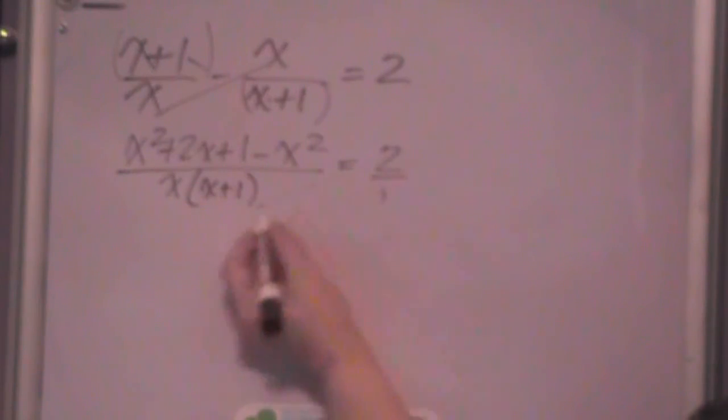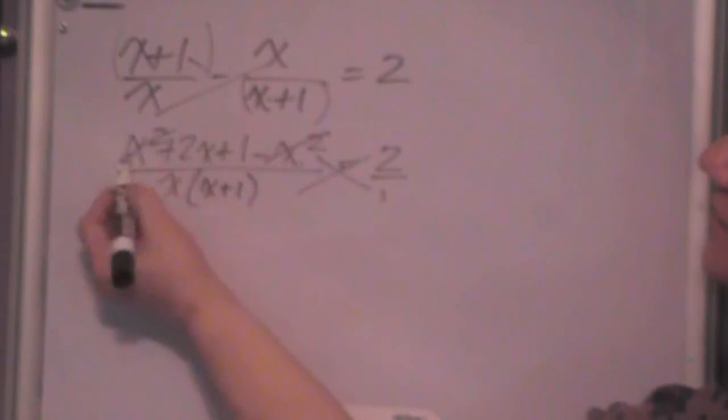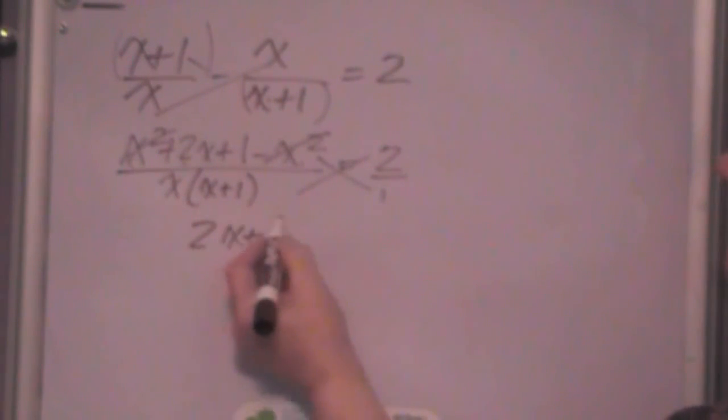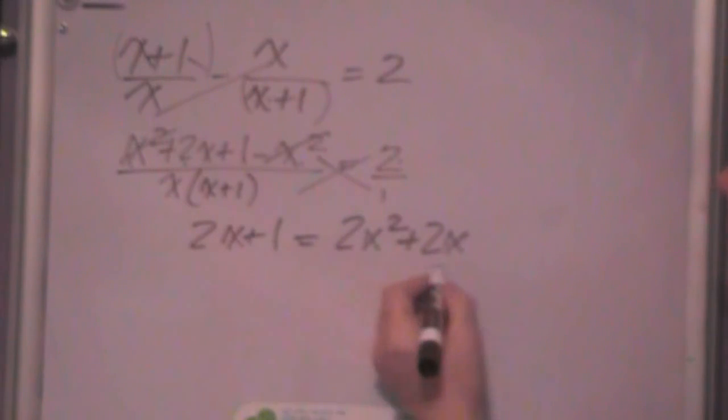Now, all I have to do, if I have 2 over 1 here, is cross multiply, because I really have a proportion. So, I have x squared plus 2x, let's combine like terms while we're at it. Sorry, x squared, x squared minus x squared, cancels out. So, I just get 2x plus 1 is equal to 2 times this is 2x times x plus 1, which 2x squared plus 2x. Now, get everything on the left or the right, whichever way you want to do it, subtract 2x from both sides, and it's gone, subtract 1, and I'm left with 2x squared minus 1 equals 0.